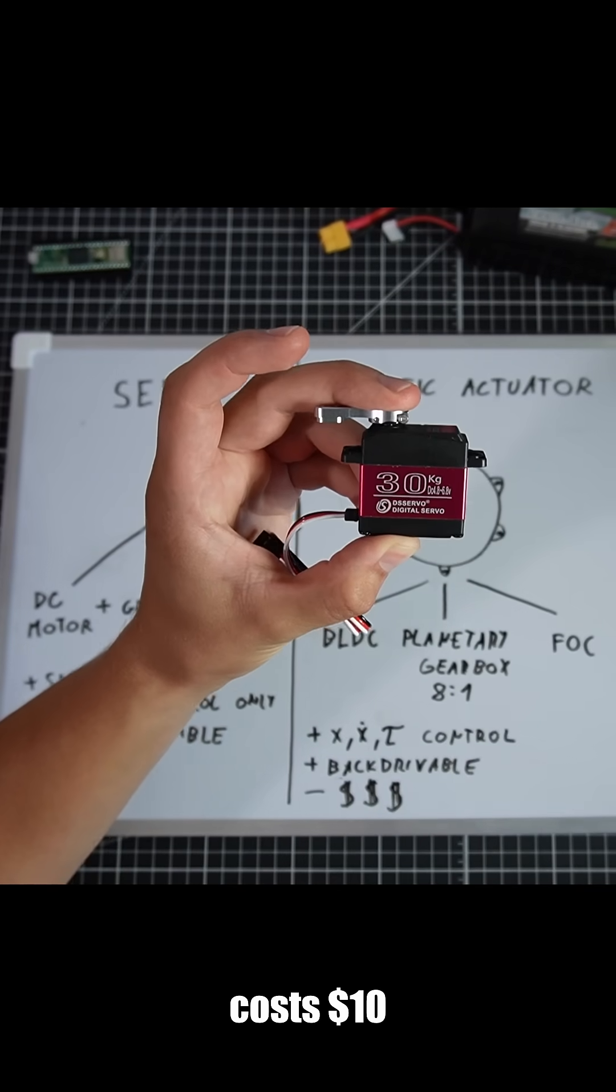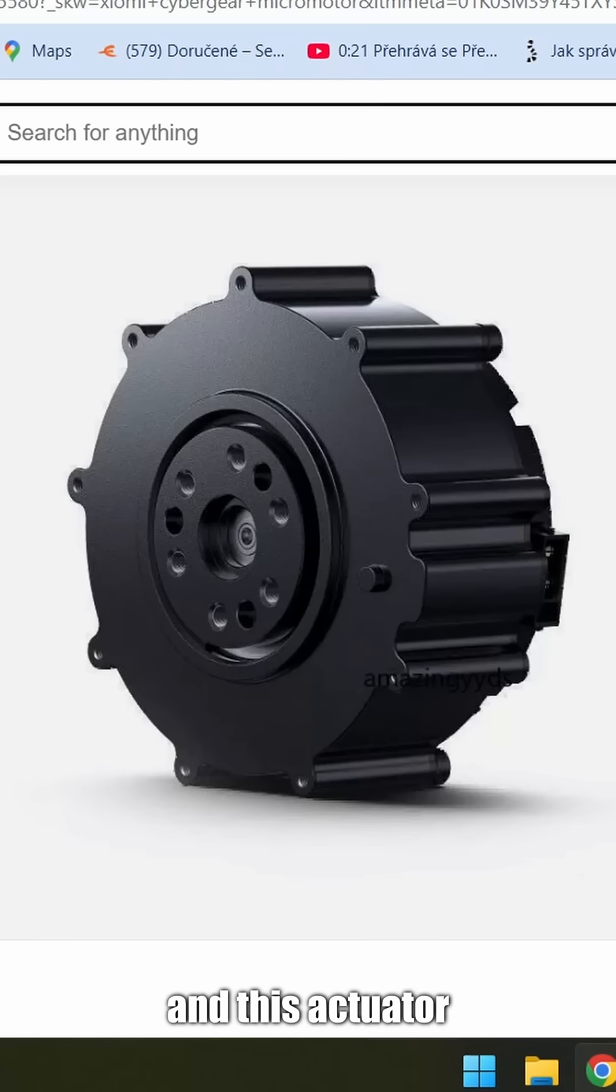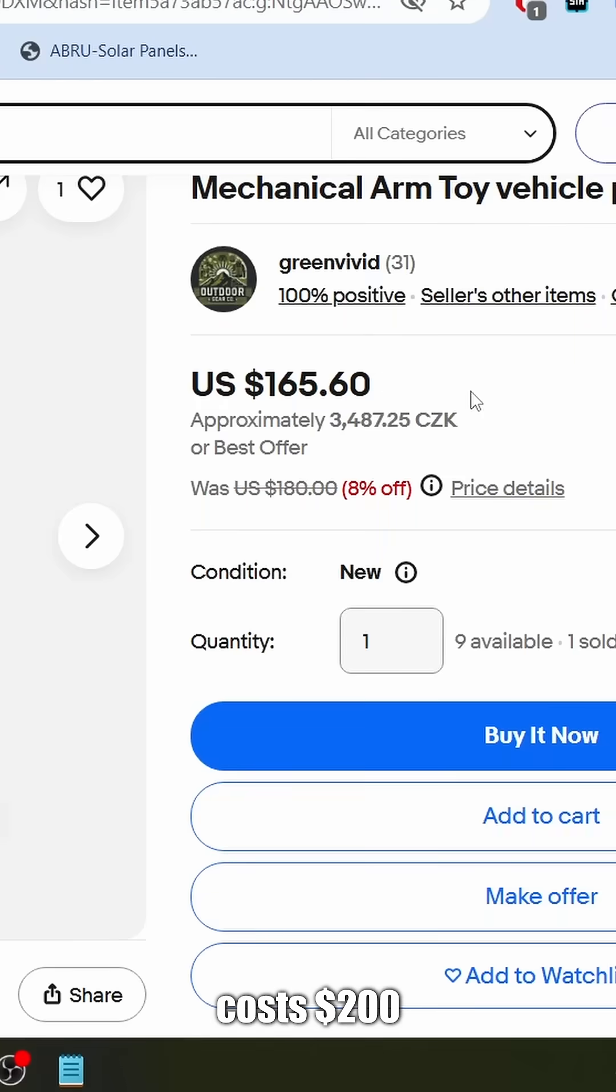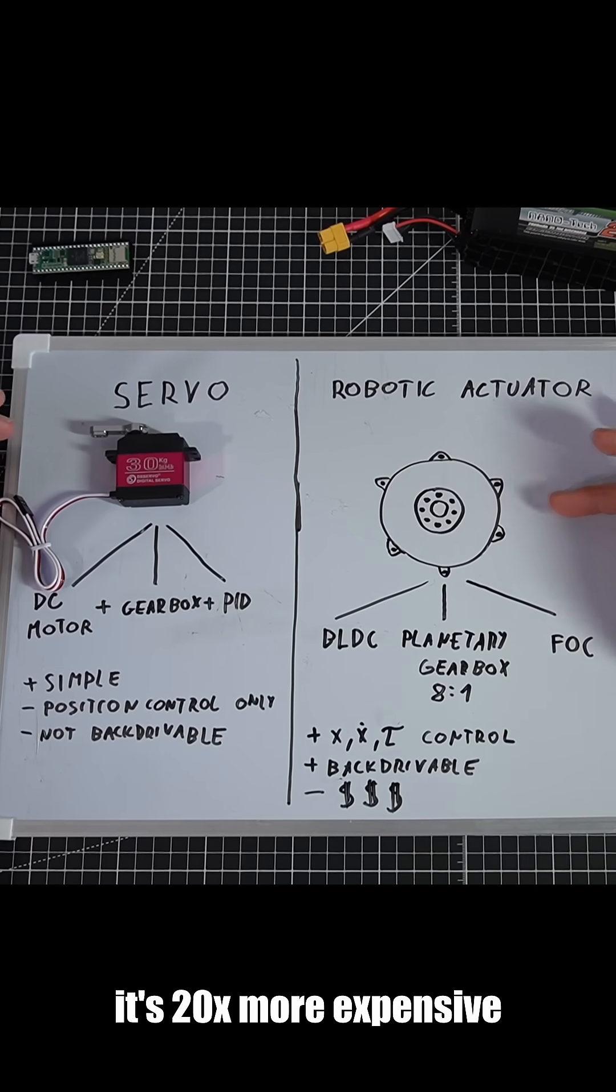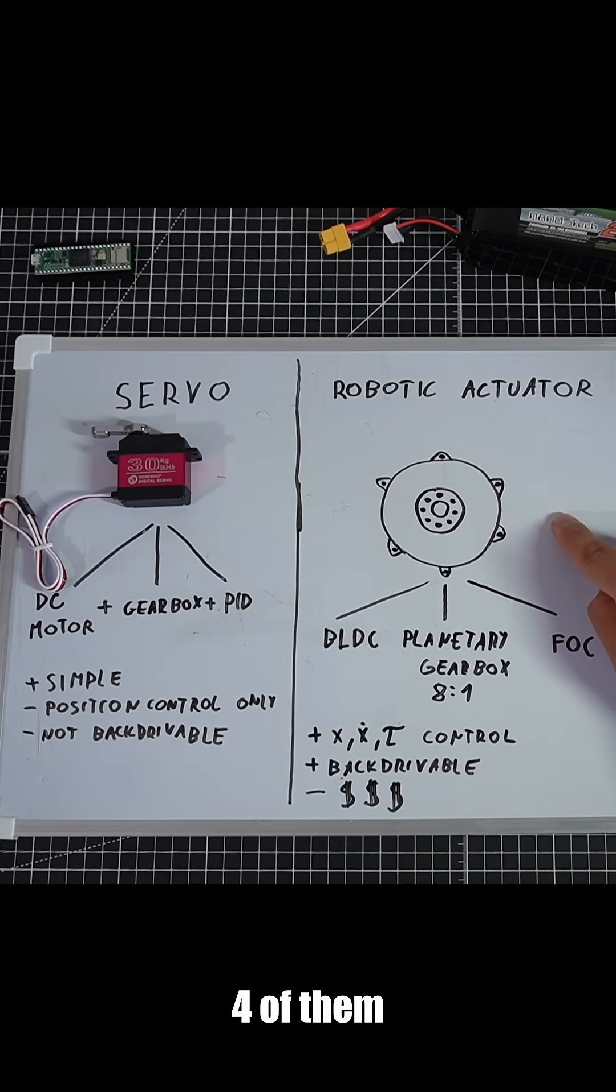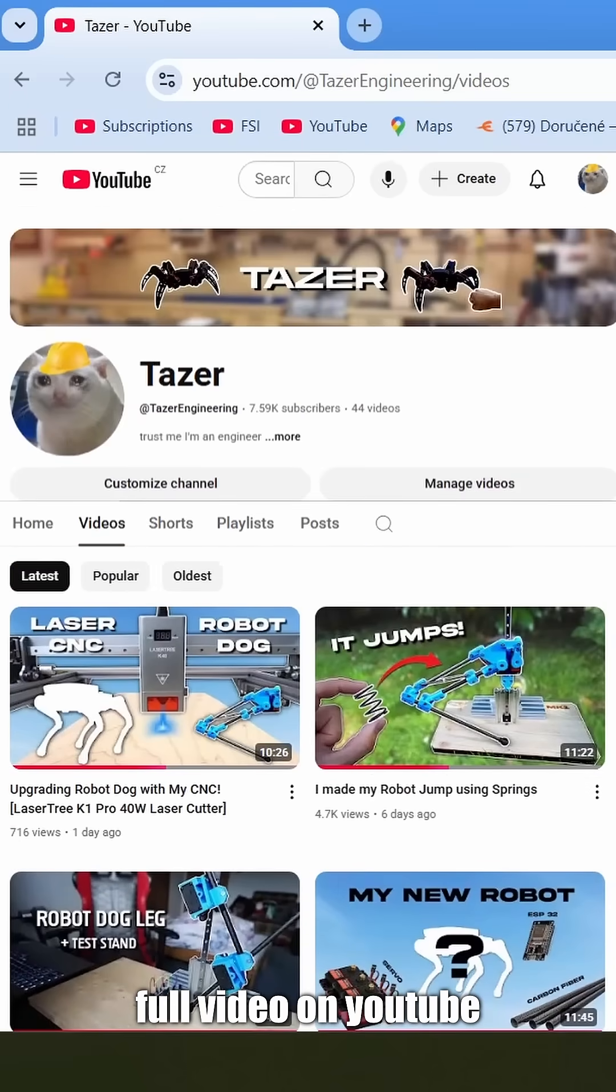This servo motor costs $10 and this actuator costs $200. It's 20 times more expensive, and that's why I'm gonna use only four of these. Full video on my Taser Engineering YouTube channel.